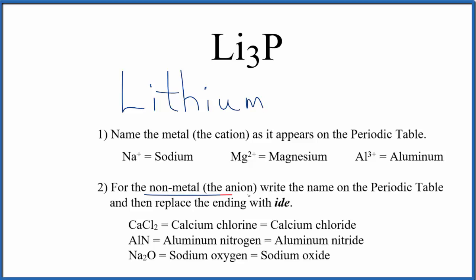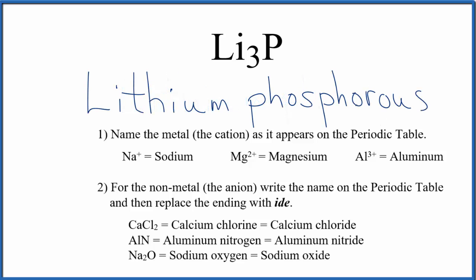Next, we write the name for the non-metal as it appears on the periodic table. So P, that's phosphorus. We use a lowercase p, and then we're going to take the ending here, and we're going to change it to ide.